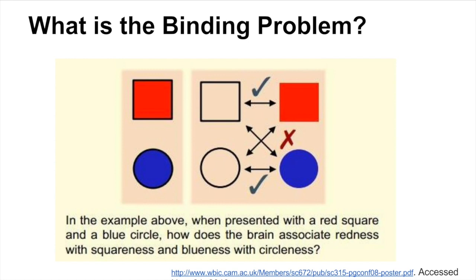So what is the binding problem? In this diagram, you see two different shapes, one being a square which is red and a circle that's blue. And in this example, we're trying to understand how does the brain associate the redness of the square and the blueness of the circle.